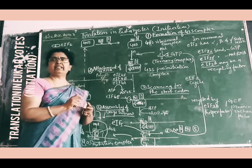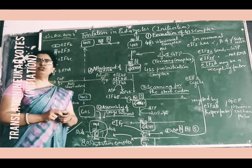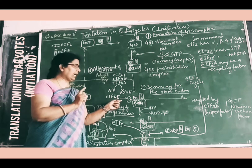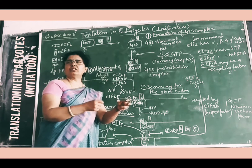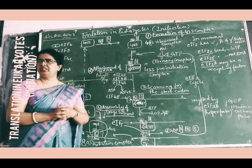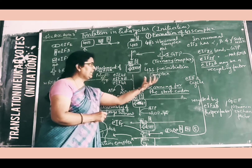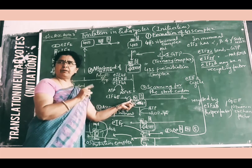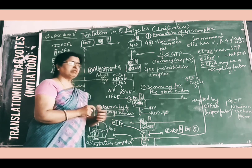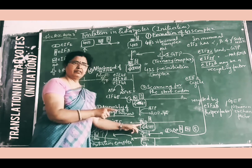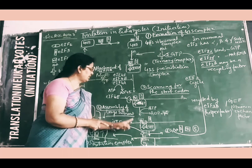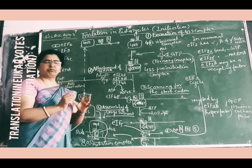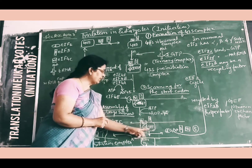The next important process is scanning — scanning for the start codon. As you know, in prokaryotes, initiation involves the Shine-Dalgarno sequence, which is absent in eukaryotes. So scanning is essential for searching the AUG initiation codon. The 43S pre-initiation complex binds with the mRNA at its 5-prime cap and then scans the mRNA until it finds the AUG start codon.